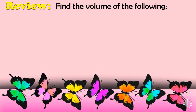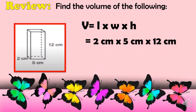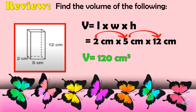Let us now review our past lesson. Find the volume of the following. For the first figure, we will use the formula V = L × W × H, which stands for length times width times height. Substituting: the length is 2 cm, width is 5 cm, and height is 12 cm. Multiplying 2 × 5 × 12 gives us a volume of 120 cm³.